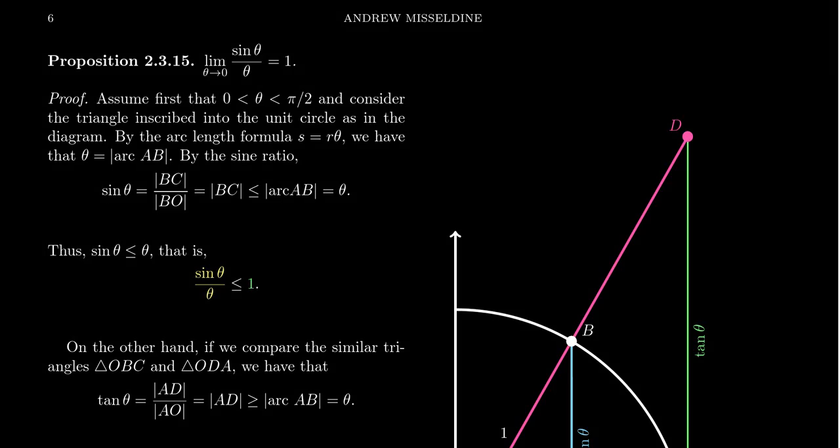I want to prove that the limit as theta approaches 0 of sine theta over theta is equal to 1. This proof is going to involve a geometric argument using the unit circle, which isn't too complicated. It's also going to be an application of the squeeze theorem.